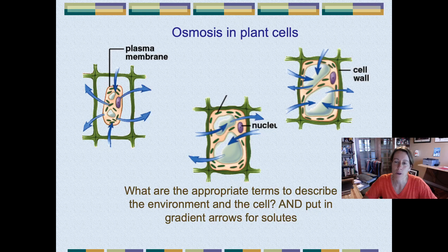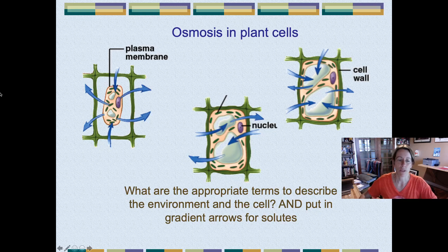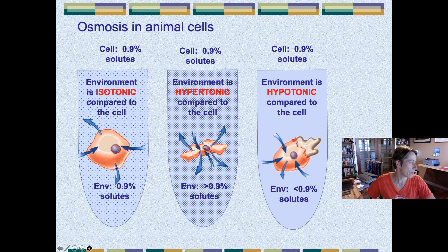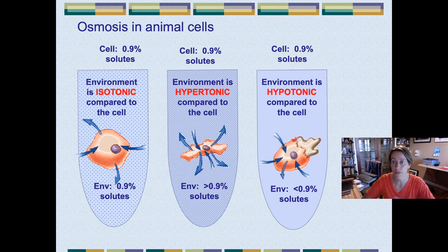Now, these are plant cells in this diagram, and on the previous slide they were animal cells. There's a difference between animal cells and plants — many differences — but one of the main differences is that plant cells have a wall around them and animal cells do not.